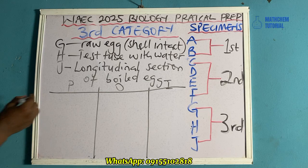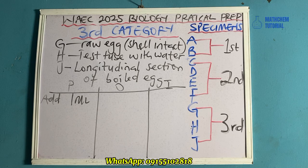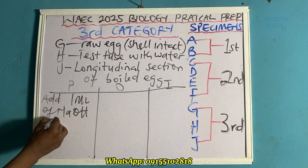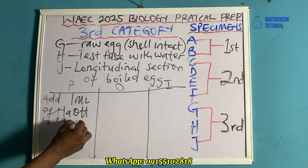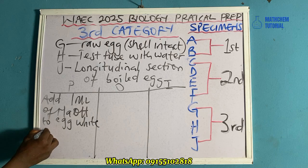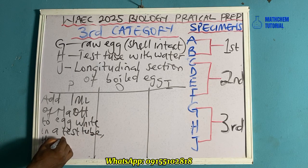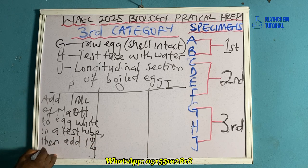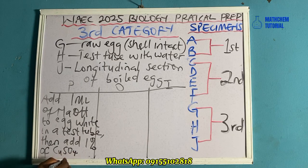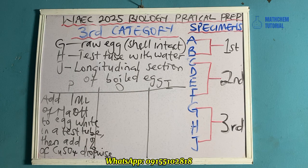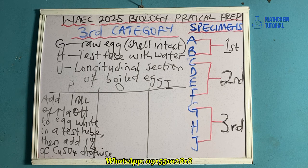For the procedure, you are going to write: add 1 ml of sodium hydroxide to egg white in a test tube, then add 1% copper sulfate dropwise. That is the full procedure for the biuret protein test.